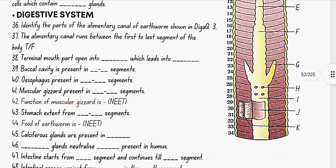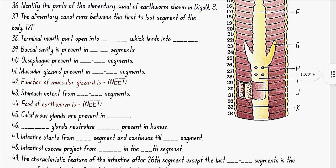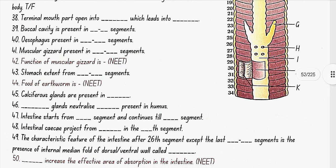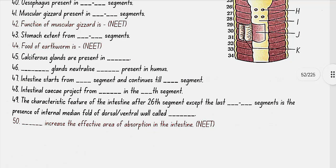The alimentary canal runs between the first to last segment of the body — yes, true. The terminal mouth opens into the buccal cavity which leads to the muscular pharynx. Buccal cavity is present in segments 1 to 3. Esophagus is present in segments 5 to 7. Muscular gizzard is present in segments 8 to 9. The function of the muscular gizzard is grinding soil particles and decaying leaves. Stomach extends from segments 9 to 14. Food of earthworm is decaying leaves and organic matter. Calciferous glands are present in the stomach and neutralize humic acid present in humus.